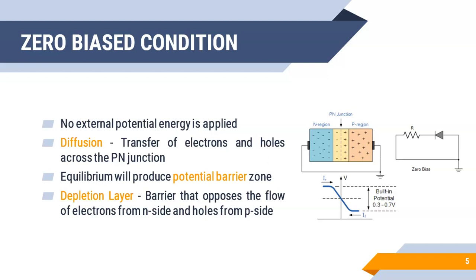After a while, our diode will reach equilibrium state. We can also call it steady state or neutral state. This state will produce a potential barrier area around the junction. What will happen to this area?